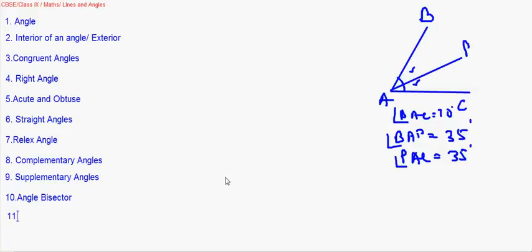What are collinear and non-collinear points? Three or more points which lie on the same line are collinear. Points which do not lie on the same line are non-collinear.